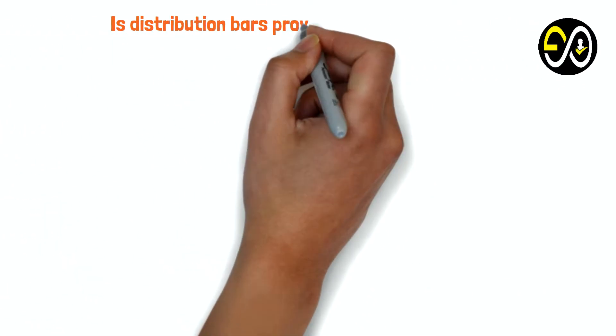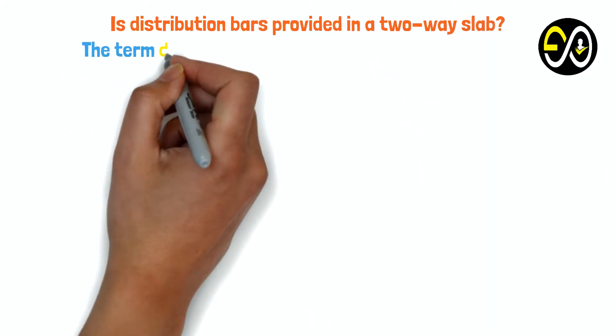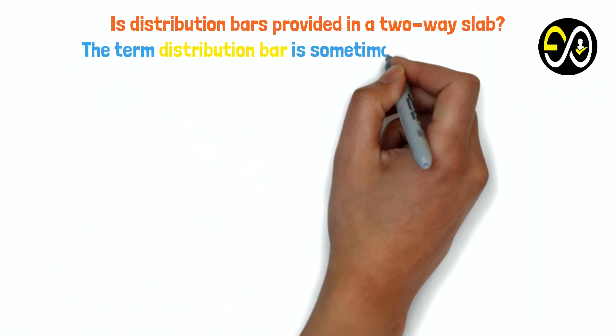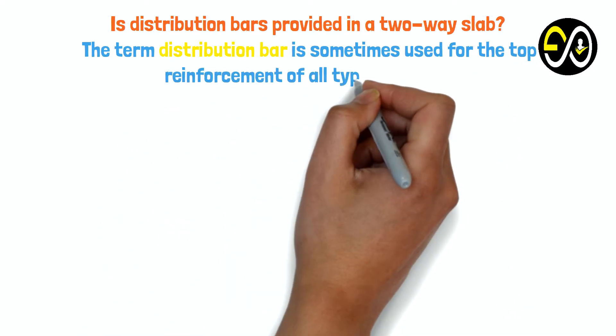Is distribution bars provided in a two-way slab? The term distribution bar is sometimes used for the top reinforcement of all types of slabs.